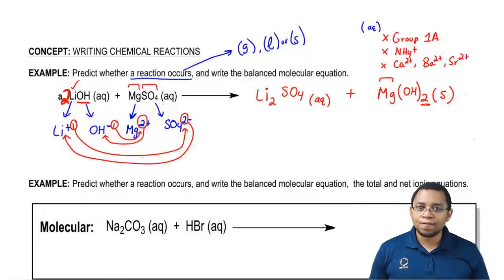This is the approach you have to take in order to figure out what your products are. First you break up the reactants into their ions, then they switch partners. The positive ion will be attracted to a new negative ion and vice versa.